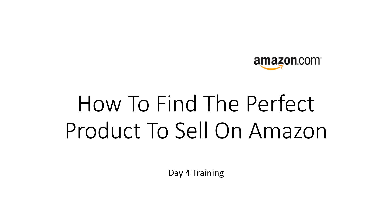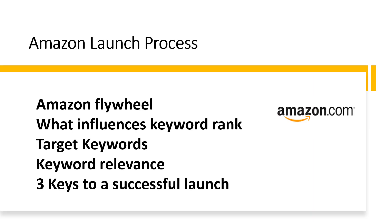Good morning and welcome to day four of this five-day training on how to find the perfect products to sell on Amazon. I hope you're all beginning to see the potential of what profit there is to be made selling your own branded goods on the Amazon platform. Today we're going to look at the Amazon product launch process, the Amazon flywheel, a basic overview of what influences keyword rank, your target keywords, the importance of keyword relevance, and the three keys to a successful launch.